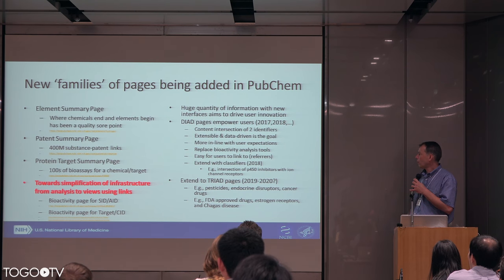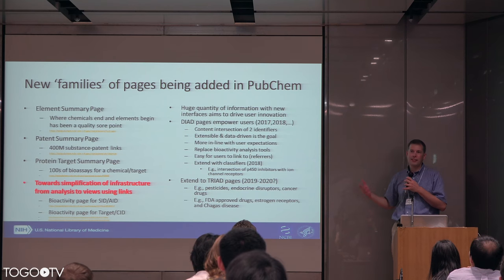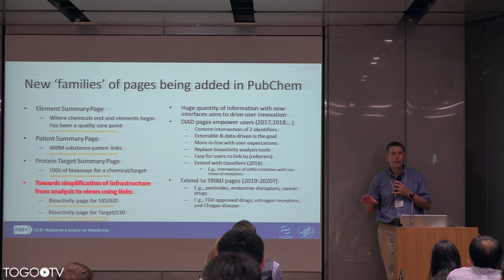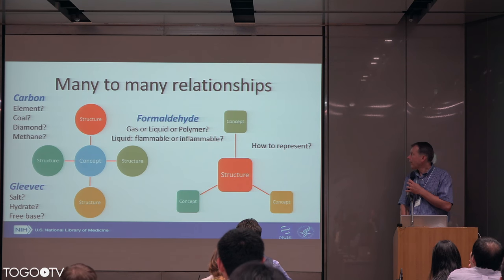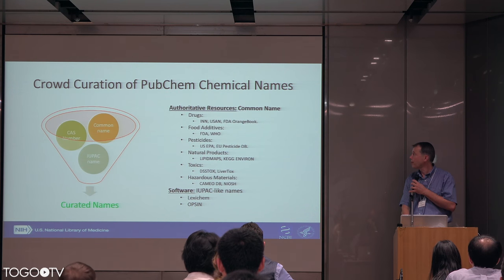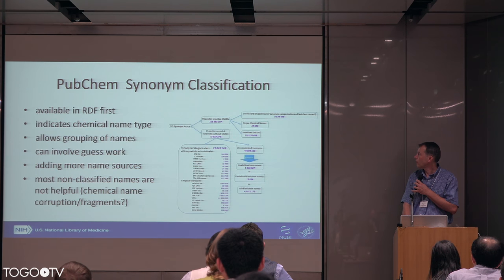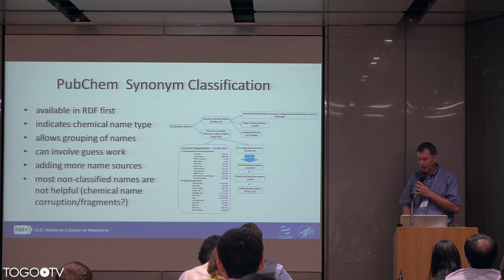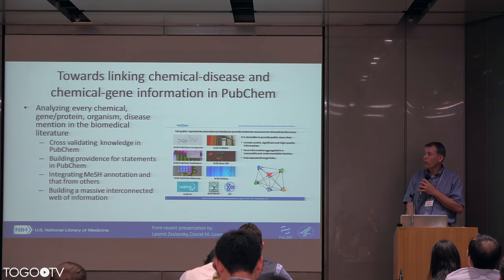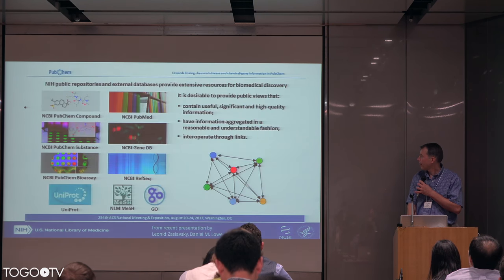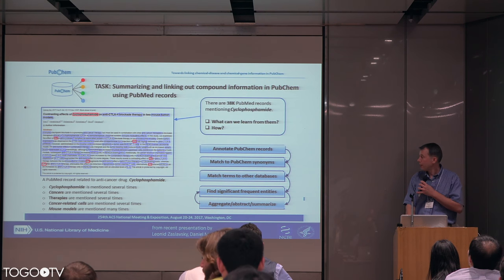For example, you could ask for all P450 inhibitors and how they associate with ion receptors, or find all FDA-approved drugs involving estrogen receptors and Chagas disease. Being able to do those types of intersections would be very useful. We're dealing with many-to-many relationships, which are very difficult to work with. We've been doing crowd curation of chemical names, in part by classifying the names that are there. We have really hundreds of different authoritative sources of information content, and we're trying to find ways to improve our understanding — some of which I'll be working on here at the Biohackathon.